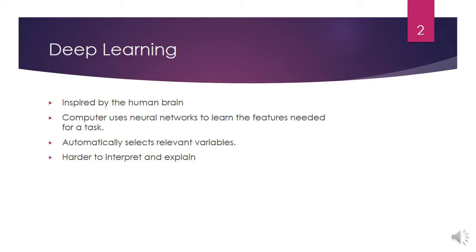Deep learning can use either unsupervised, supervised, or reinforcement learning techniques, and is inspired by the human brain. In deep learning, the computer uses neural networks — more on that topic in a later video — to automatically select relevant variables.